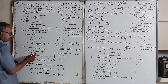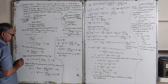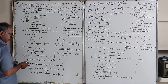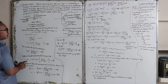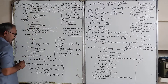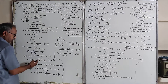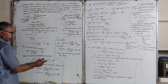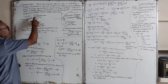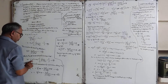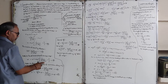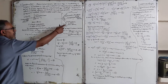Applying conservation of energy, the incident photon energy h-nu plus the rest energy m₀c² equals the scattered photon energy h-nu-dash plus m₀c² divided by √(1 − v²/c²). This gives us the energy conservation equation for the Compton scattering process.